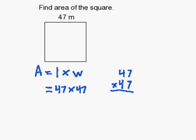So first, 7 times 7 is 49. We carry the 4. 7 times 4 is 28. Plus the 4 is 32.